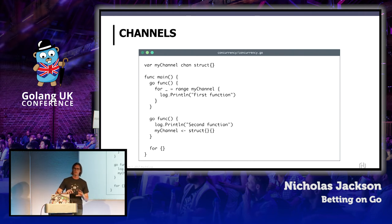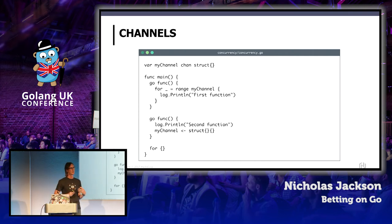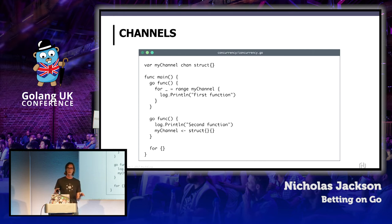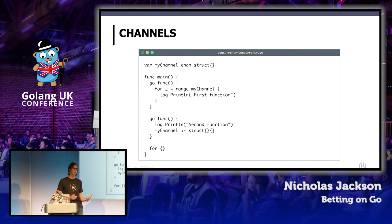Channels, of course, go hand in hand with concurrency models, and we leverage them very heavily in products like Nomad and Consul. It's really useful to have something that's easy to use — it's probably one of the more complicated areas of Go, but once you get your head around it, it's a very pleasant way to deal with concurrency.